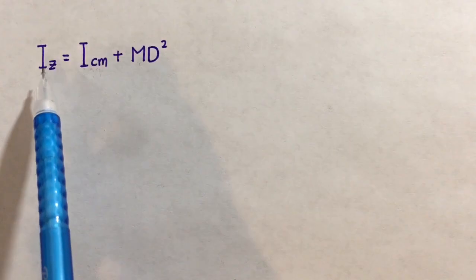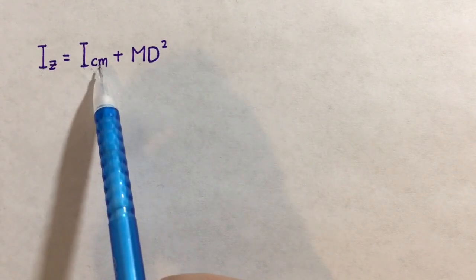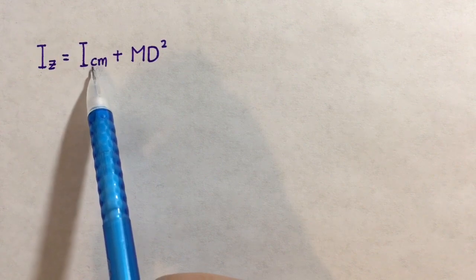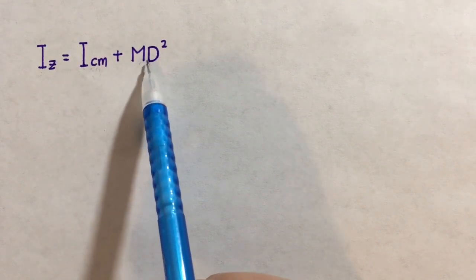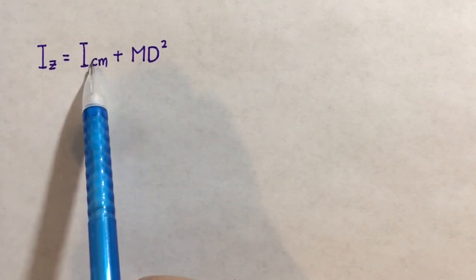In this formula, I sub Z represents our moment of inertia about our new axis, ICM represents the moment of inertia about the center of mass, M represents the mass of the object, and D represents the distance between the new axis and the center of mass.